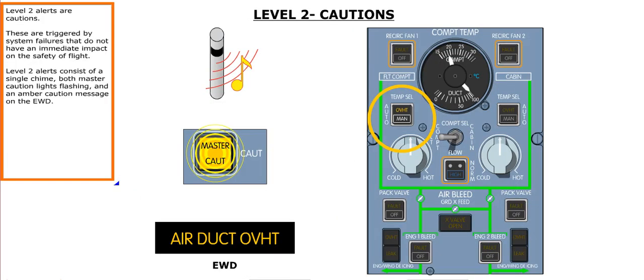Level 2 alerts are cautions. These are triggered by system failures that do not have an immediate impact on the safety of flight. Level 2 alerts consist of a single chime, both master caution lights flashing, and an amber caution message on the EWD.